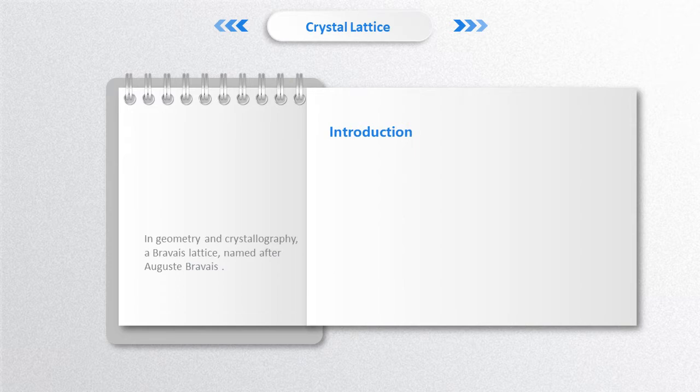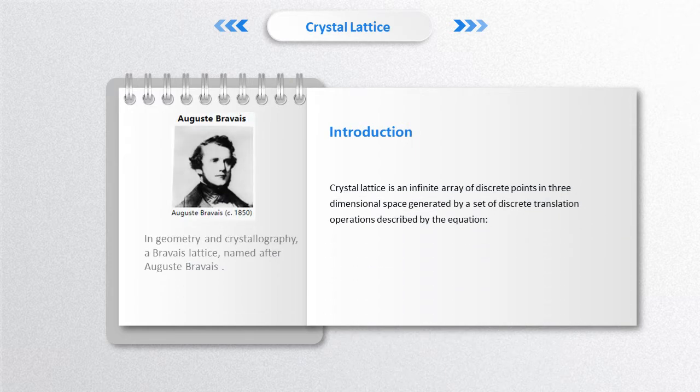In geometry and crystallography, a Bravais lattice, named after Auguste Bravais, is an infinite array of discrete points in three-dimensional space, generated by a set of discrete translation operations described by the equation.